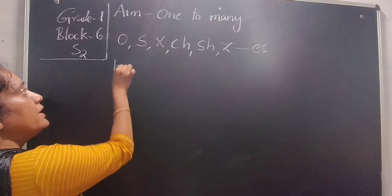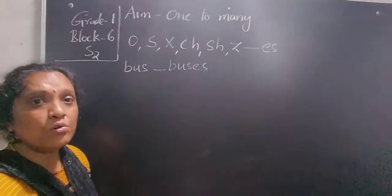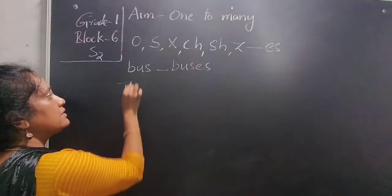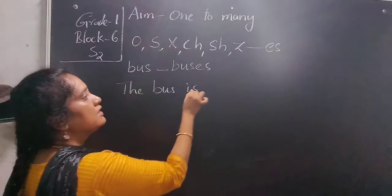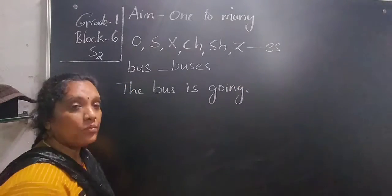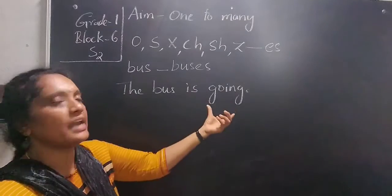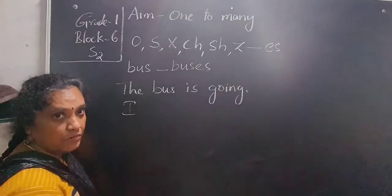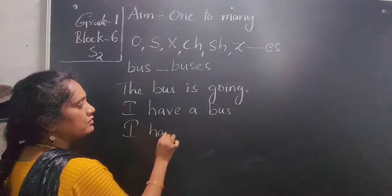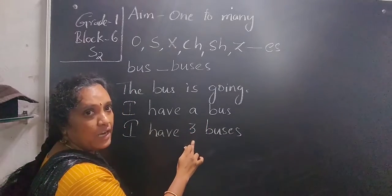If they give you a word like 'bus', how do you change it? We change it as 'buses'. Now, how to write in sentences — if there is a bus, singular, the bus is going. You already learned how to write using verb forms. The bus is going. Ramu is going. We can use the name as subject and say something about it. Using 'I have' sentences: I have a bus, or I have three buses, because a singular one is followed with 'a' and for plural we can give the numbering.